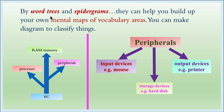Next, by word trees and spider grams — they can help you build up your own mental maps of vocabulary areas. You can make a diagram to classify things. For example, a word tree for 'personal computer' can branch into 'processor', 'peripherals', and 'RAM memory'.